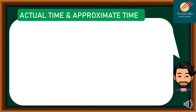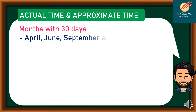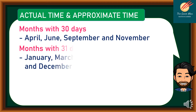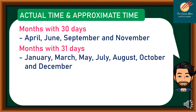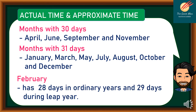Inasmuch as each of the 12 months do not equally have 30 days, Actual Time is longer than Approximate Time. So, for the months with 30 days, we have April, June, September, and November, while months with 31 days are January, March, May, July, August, October, and December. Meanwhile, February has 28 days in ordinary years and 29 days during leap year.